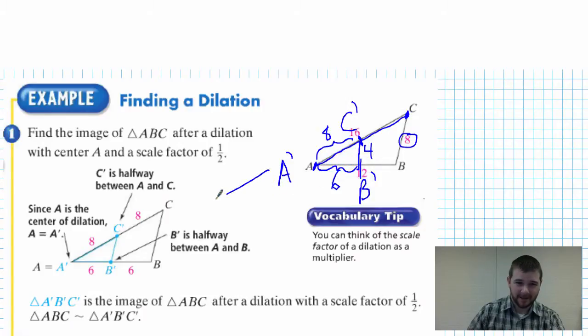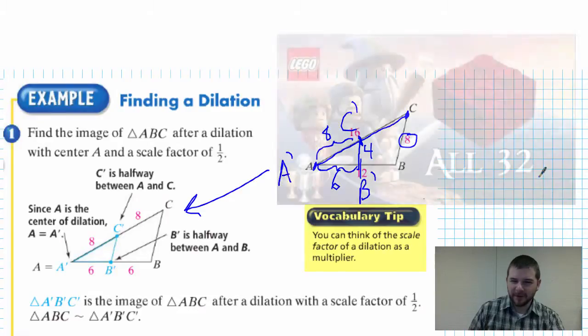For a nicer version of this, let's check out the book's example. A vocabulary tip: you can think of the scale factor of dilation as a multiplier.